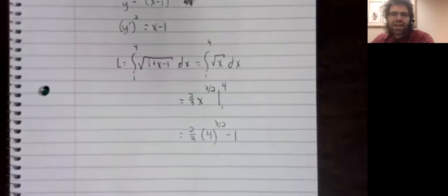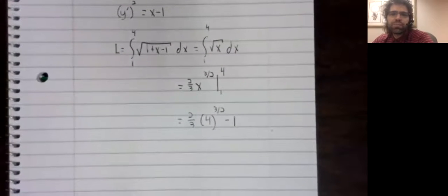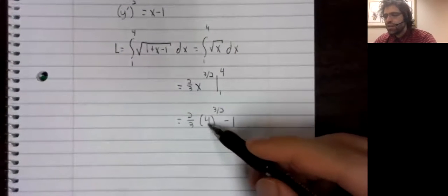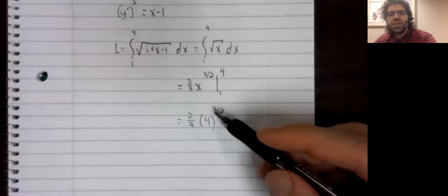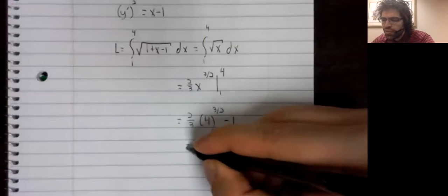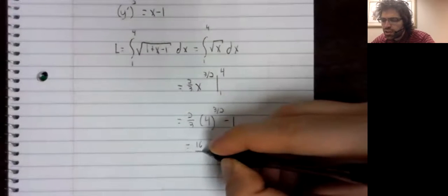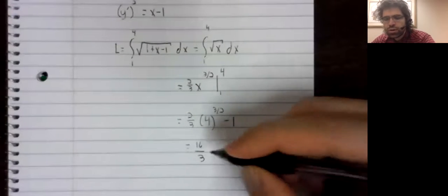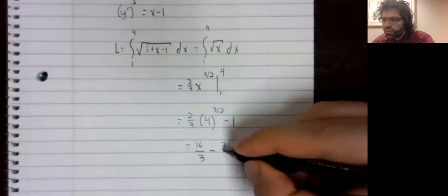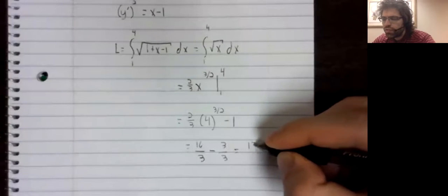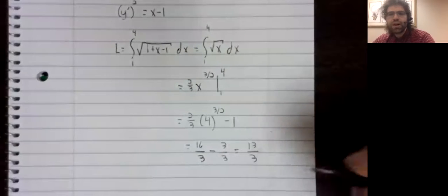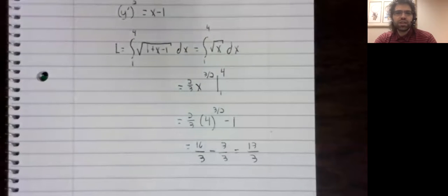And this we could plug into a calculator if we wanted to. I think it actually should simplify because 4 to the 1 halves is 2. 2 cubed is 8 times 2. I know I just said about a calculator, but now that I'm looking at this, it's simple enough that we can simplify it using pen and paper.